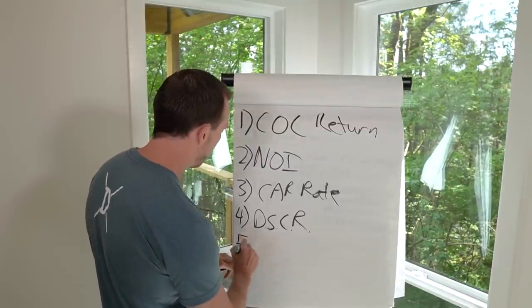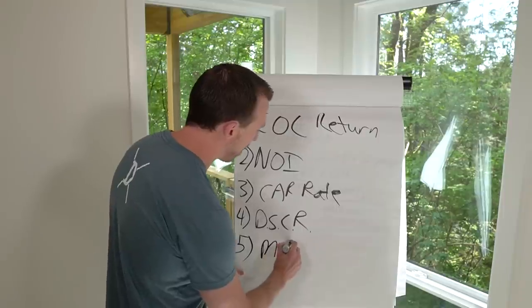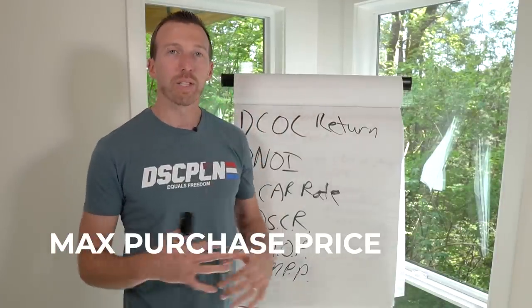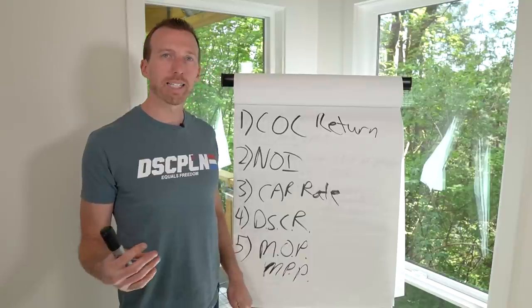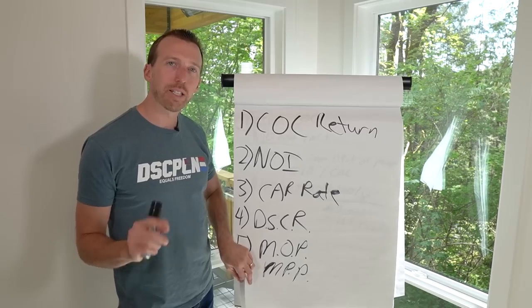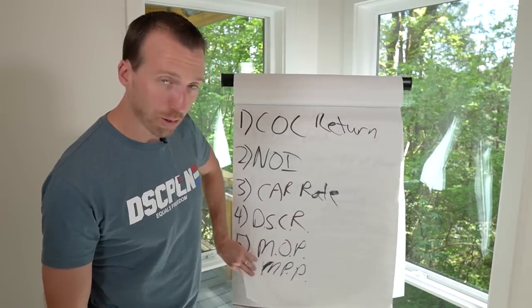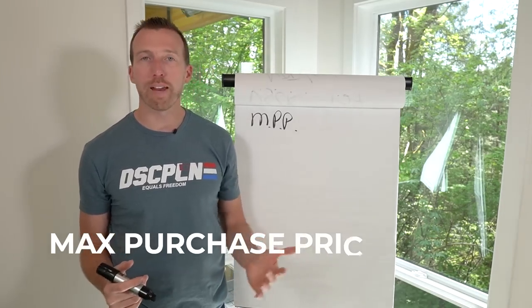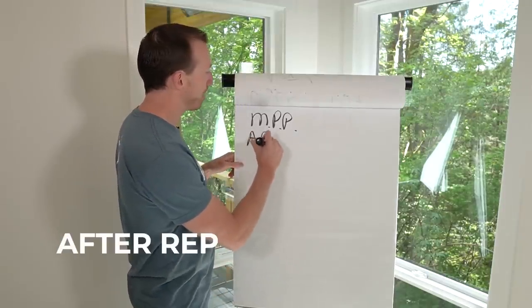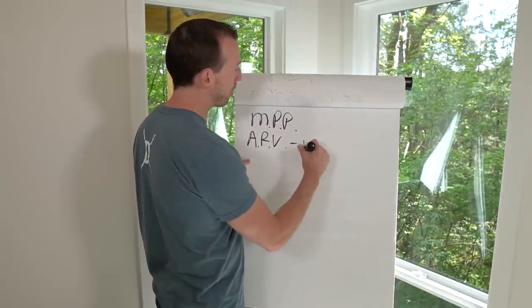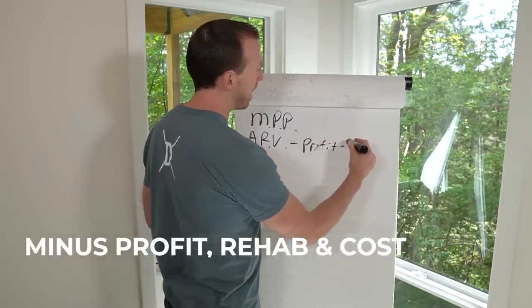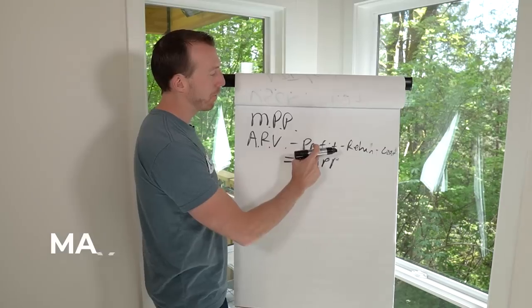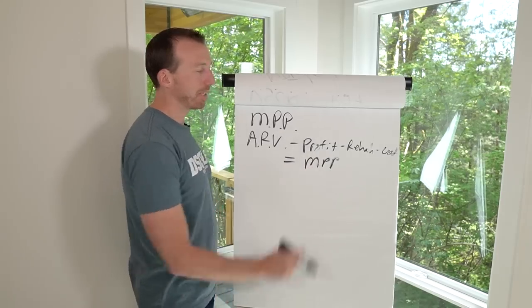Last but not least: an important equation I use every single day — max purchase price. I use this for my BRRRRs and my flips. When it comes to rentals, there's a different equation — use the rental calculator on BiggerPockets.com. But for a quick, dirty analysis on a BRRRR or flip, here's how to find your max purchase price: take the after repair value (ARV), back out the profit you want to make, back out your rehab, and back out your other costs — holding costs, escrow, fees. That gives you your max purchase price.